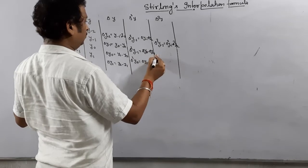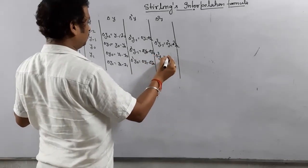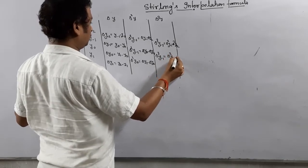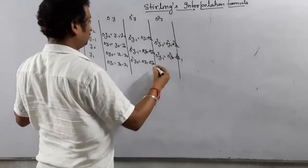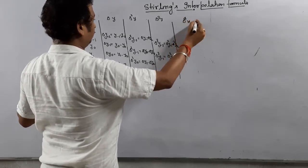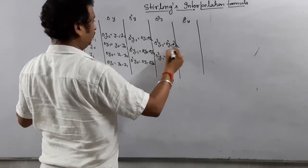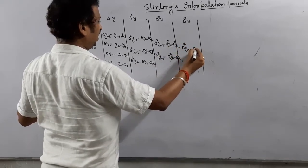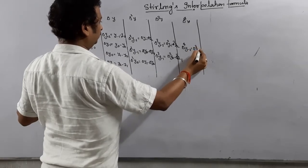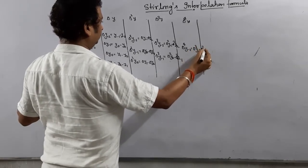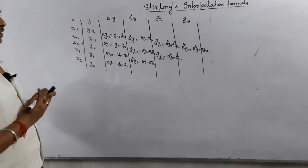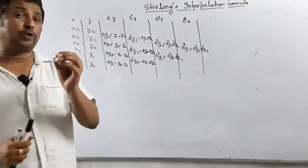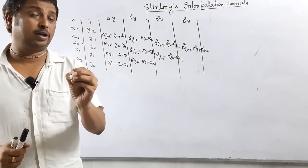For delta squared, take the difference of consecutive first-difference values. Then we go for delta cubed, delta fourth, and so on. Because we have five set of points, so up to the fourth order difference it will be there. Now I am going to tell you how to write the formula.